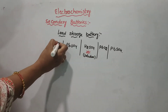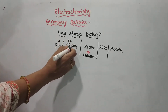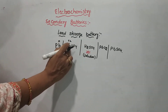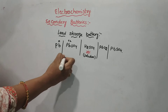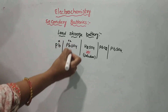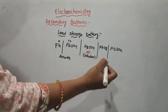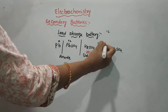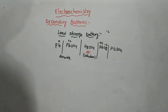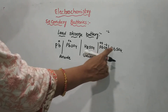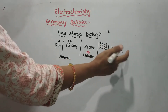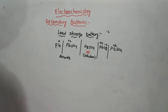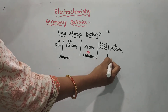Lead at the anode has oxidation state 0, and lead sulfate has lead at +2, with SO4²⁻. So here lead goes from 0 to +2 — this is the anode. At the cathode, PbO2 has oxygen at -2 (two oxygens = -4) and lead at +4. In lead sulfate, lead is +2, so the charge decreases from +4 to +2 — this is the cathode.